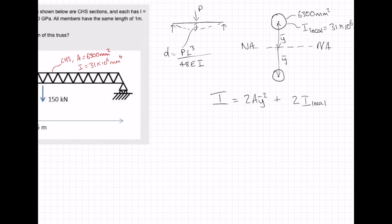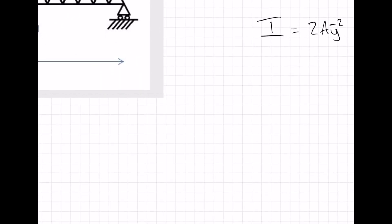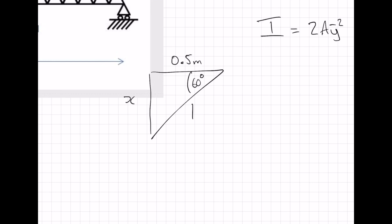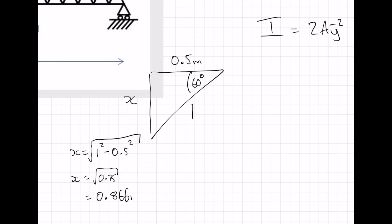So what's the value of Y bar squared? We know that these are 60 degree triangles: that's 1, that's 0.5, and that's 60 degrees. So x is equal to the square root of 1 squared minus 0.5 squared, which gives x equal to the square root of 0.75 meters, equal to 0.866 meters.